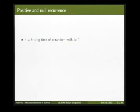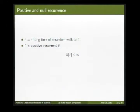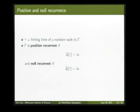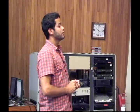This gives us a dichotomy for recurrent subgroups. We say Γ is positive recurrent if the average hitting time to Γ is finite — which is exactly example one — and null recurrent if the average is infinite — exactly example two.